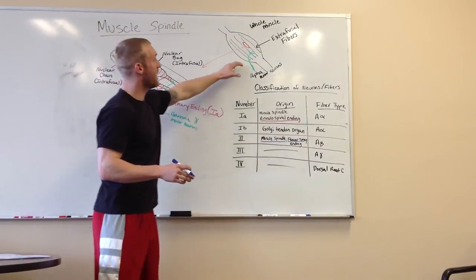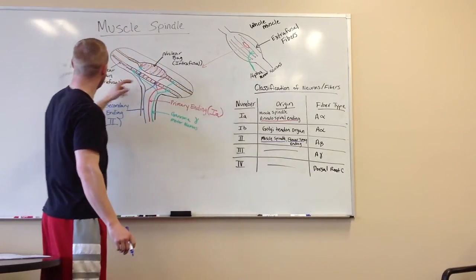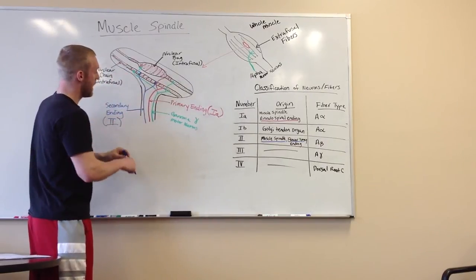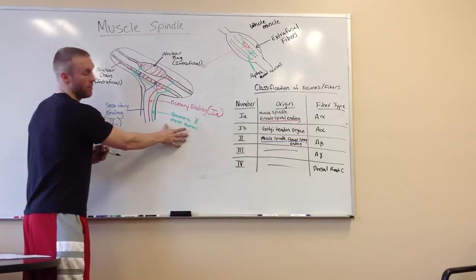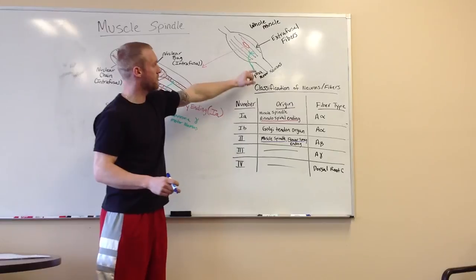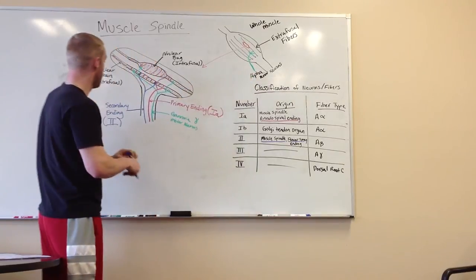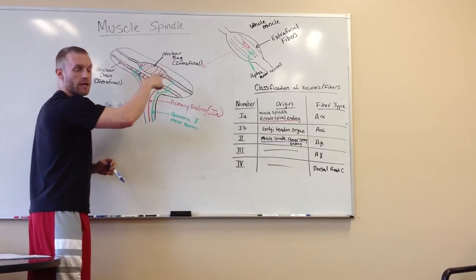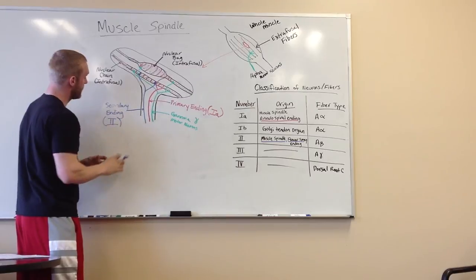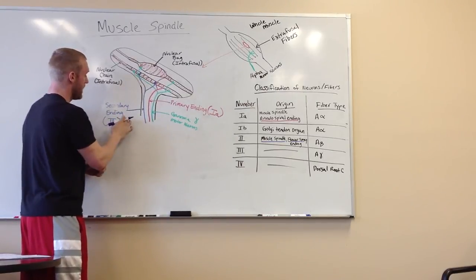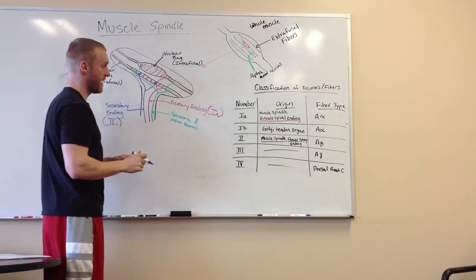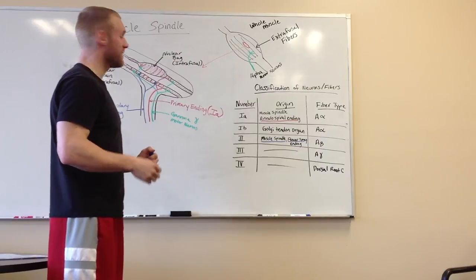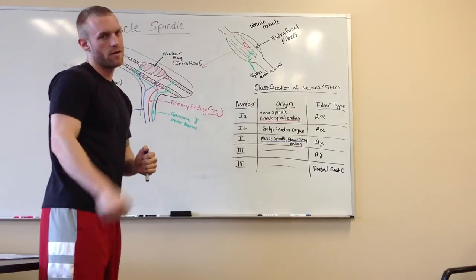So just to recap. Extrafusal fibers on the whole muscle. Intrafusal fibers, which are the nuclear bag and chain inside the muscle spindle. The intrafusal are innervated by gamma motor neurons, whereas the extrafusal are innervated by alpha motor. You have your primary and secondary ending. Your primary wrap around each intrafusal fiber. And then your secondary ending is going to go to your nuclear chain and have a flower spray that can detect your touch and pressure. So that's pretty much it. I think that's all you need to know for the test, so there you go. Thank you.